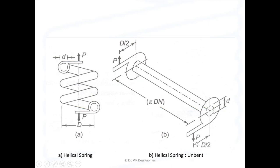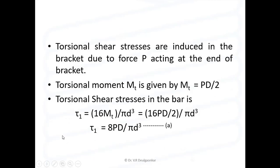As shown in the diagram, at each end of the bar, torsional shear stresses are induced in the bracket due to the force P acting at the end of the bracket. The torsional moment mt is given by mt = P into D by 2. The torsional shear stress in the bar is tau 1 = 16mt divided by pi d cubed. Substituting mt, we get tau 1 = 8PD upon pi d cubed.